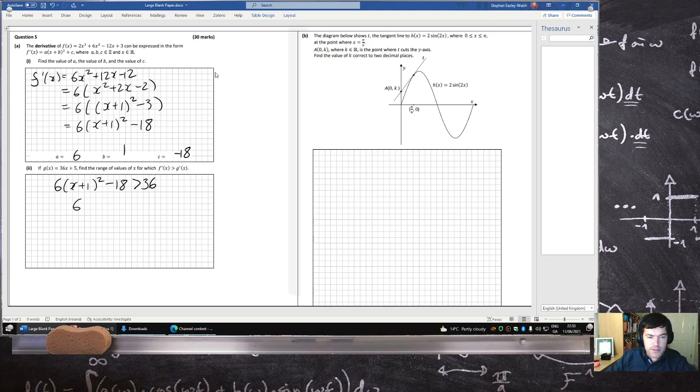So 6(x plus 1) squared greater than 36, 46, 56, 54. Divide by 6, (x plus 1) squared greater than... Okay, so 8, 9.